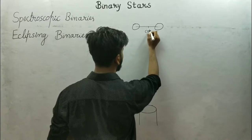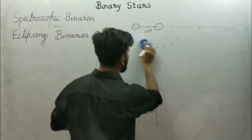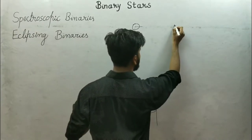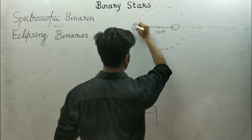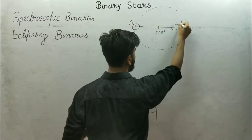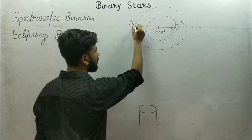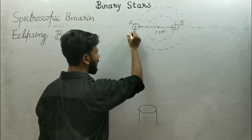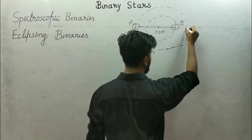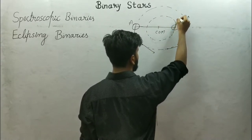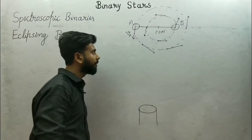Let's see how we use spectroscopy. Here is the center of mass, and star A revolves like this. Here is another star B, and star B also revolves around the center of mass. Star A has a velocity v_A in this direction, and similarly star B has a velocity v_B.